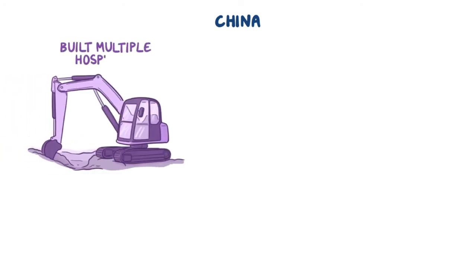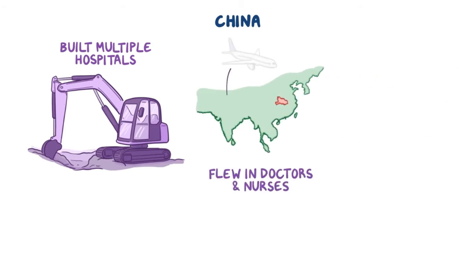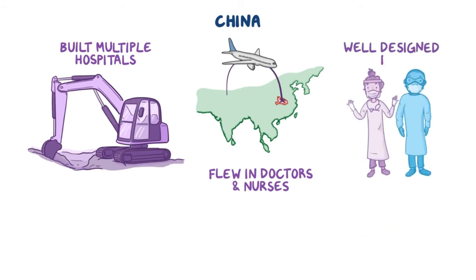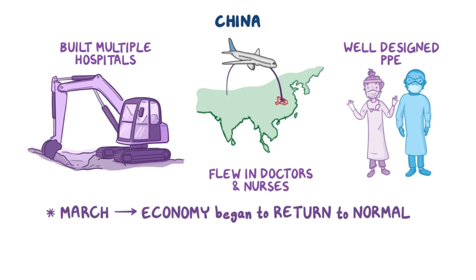Meanwhile, given how many cases there already were at that point, China made efforts to raise the line. They built multiple hospitals dedicated to COVID-19 patients and flew in doctors and nurses from less affected regions of the country to staff these hospitals, and kept them protected with well-designed PPE that covered them from head to toe. By March, the economy began to return to normal, and China was seeing more cases of COVID-19 from travelers than from their citizens.